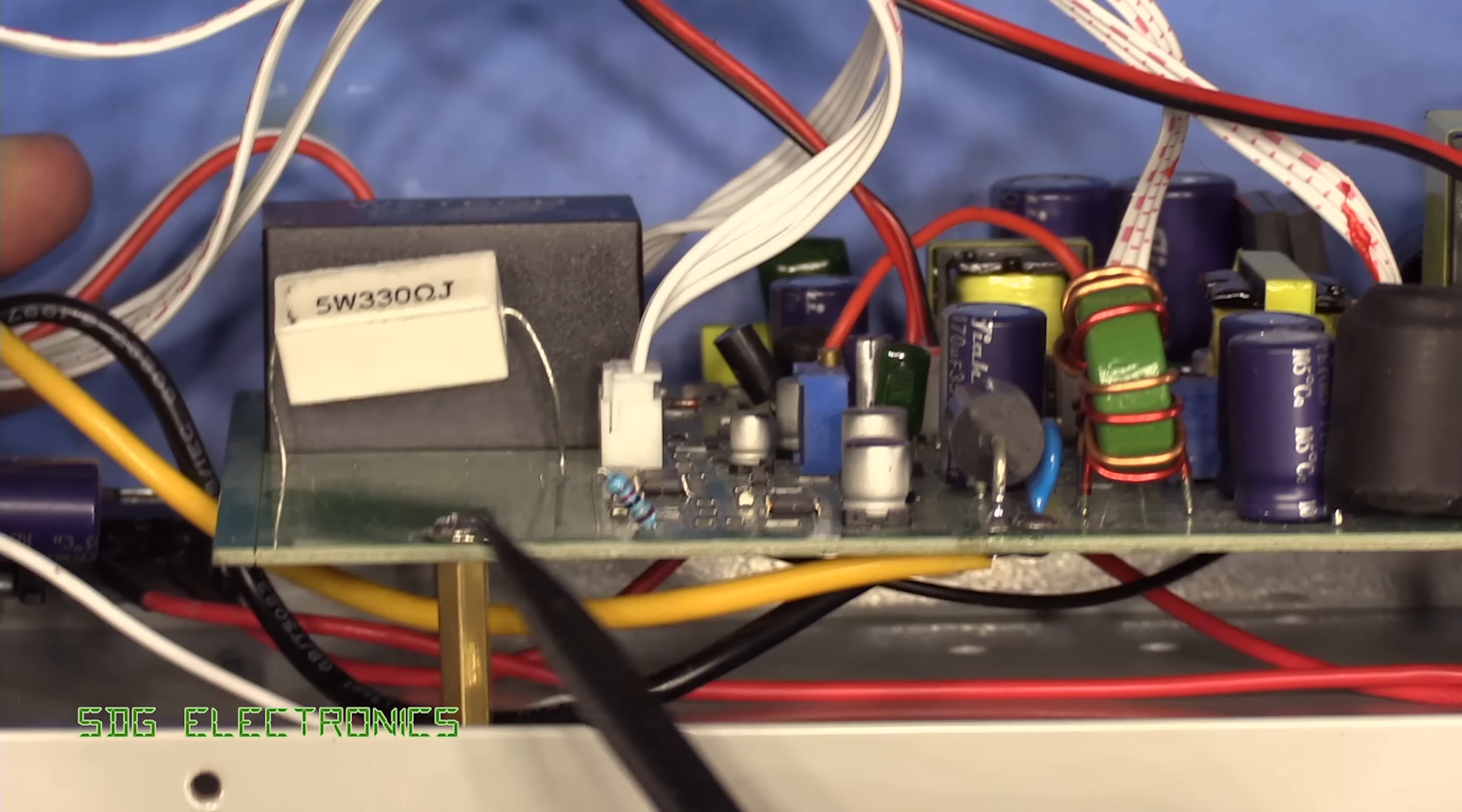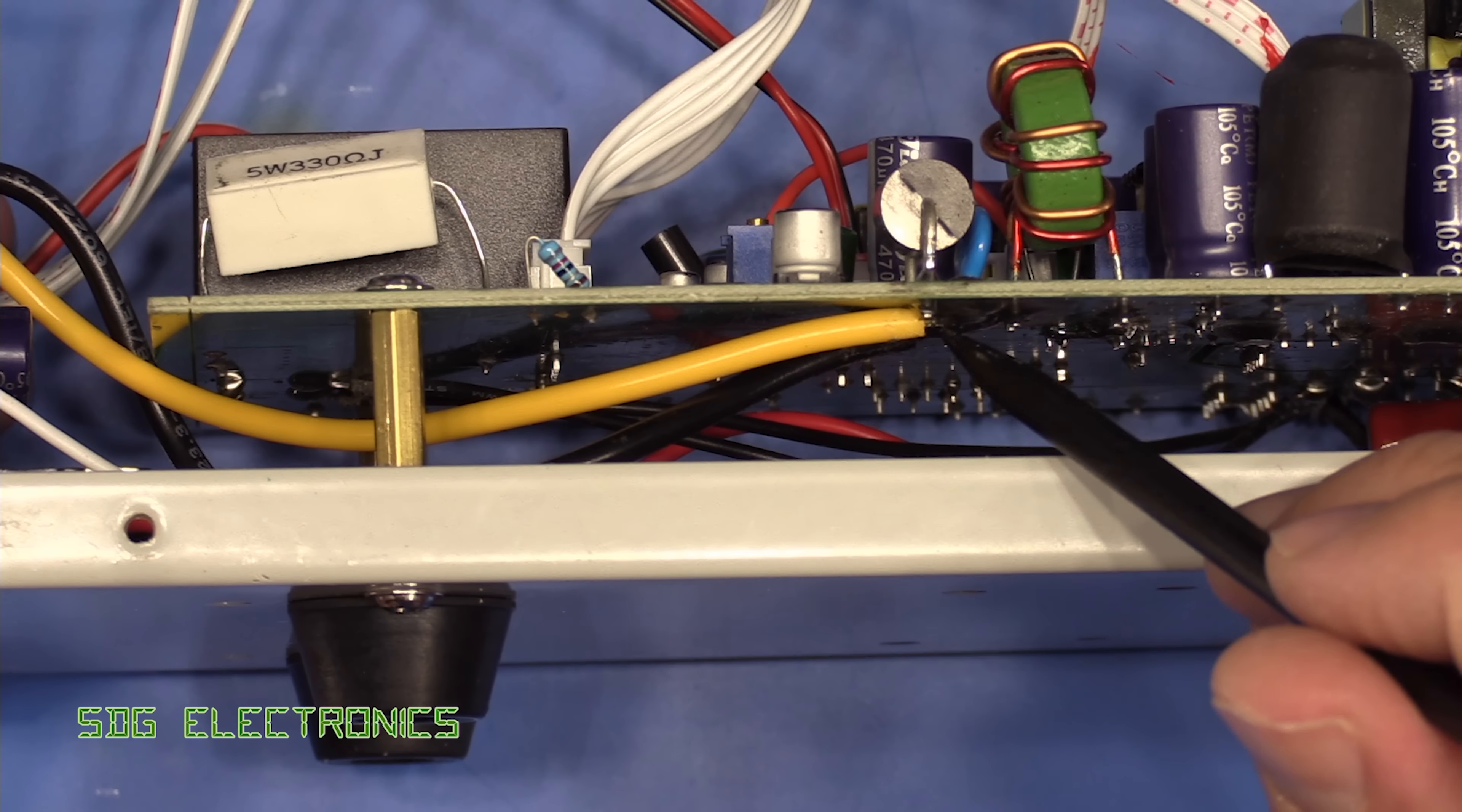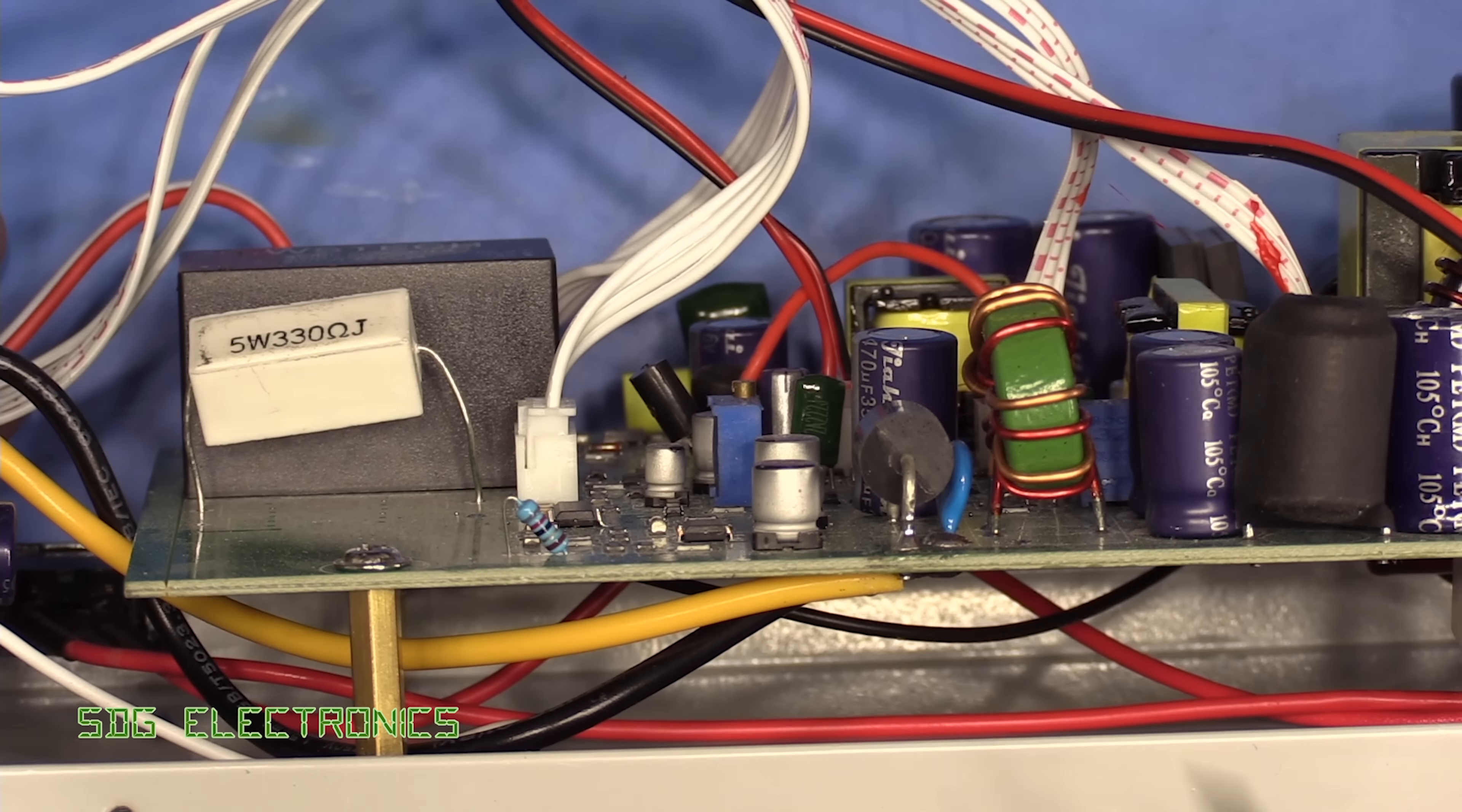I mean, the wires for the front panel are soldered directly onto the PCB. Pretty common to see on this type of equipment again. Even on some of the more expensive equipment it's soldered directly in. Although it would have been nice to have seen a connector there.